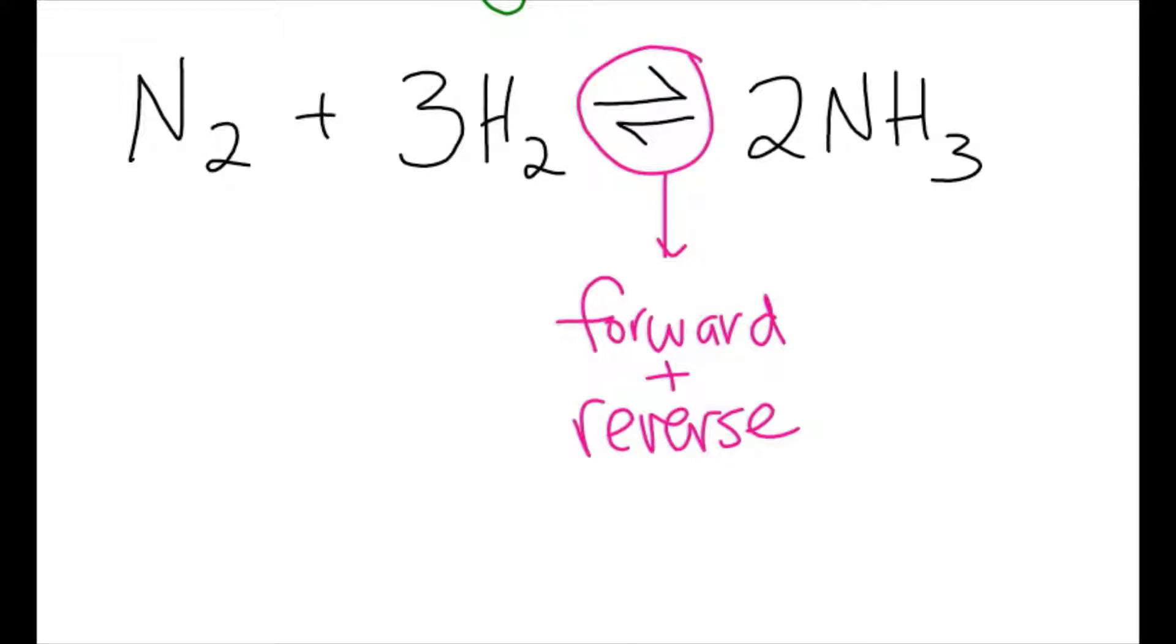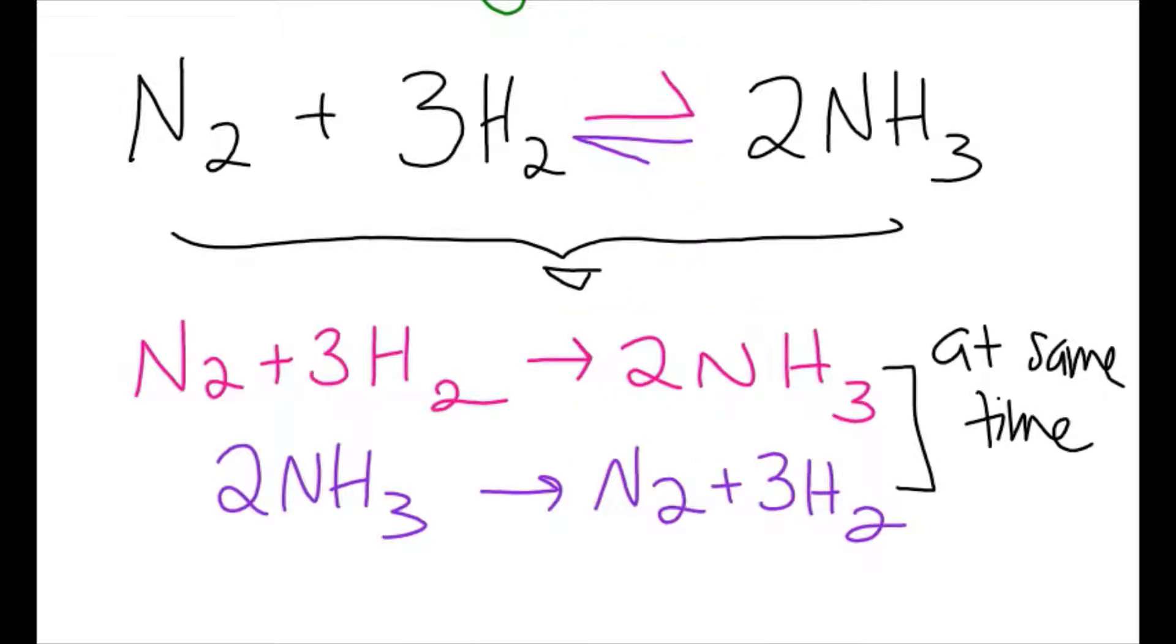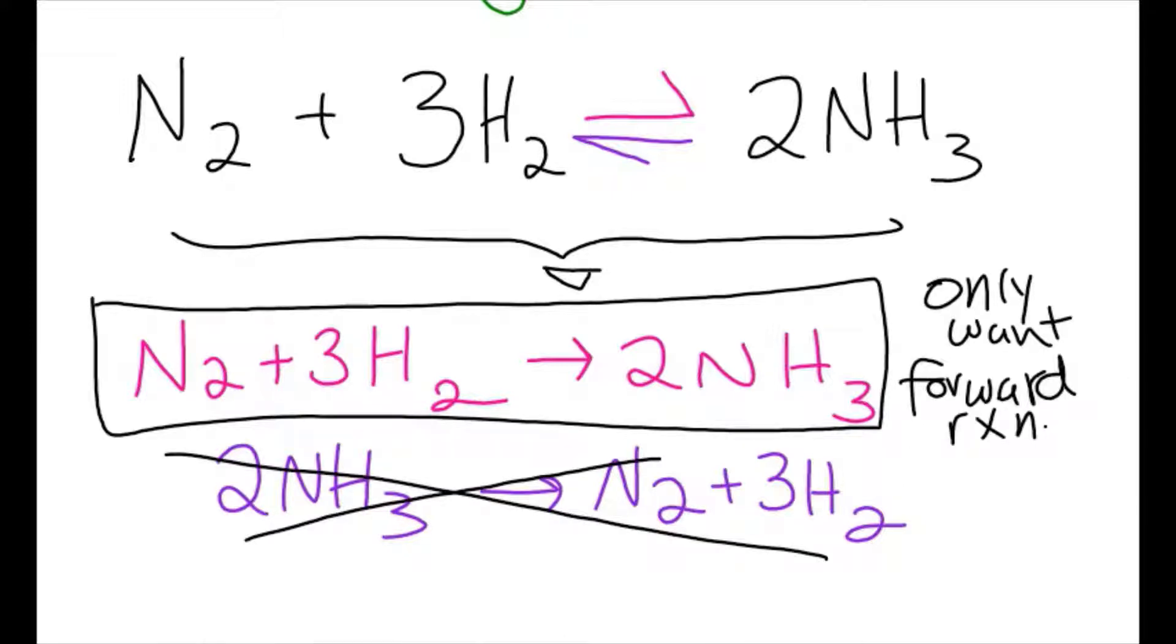For every equilibrium expression, there is a forward and reverse reaction, meaning that while we create ammonia, we also break it down. However, we only want to create ammonia, so specific conditions are required. But how did we determine these conditions?